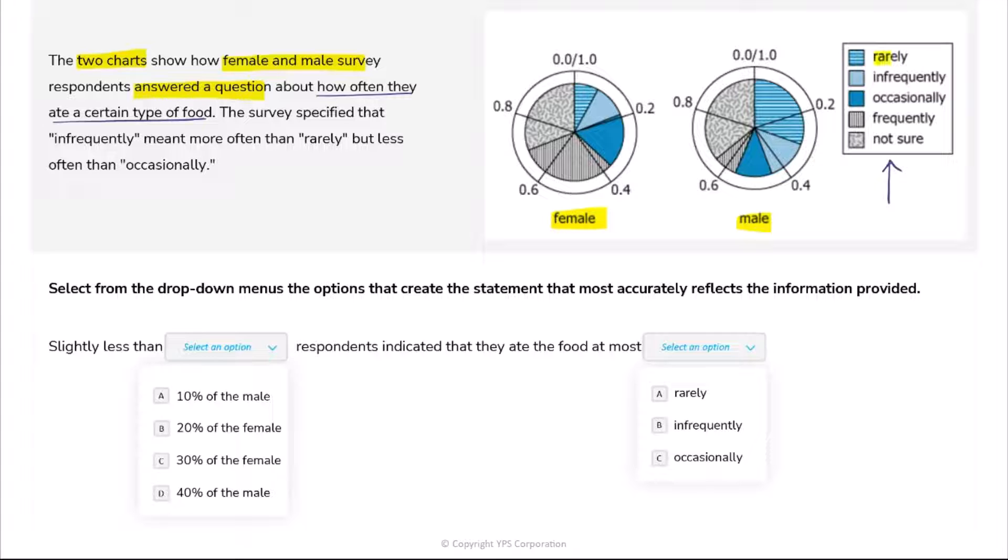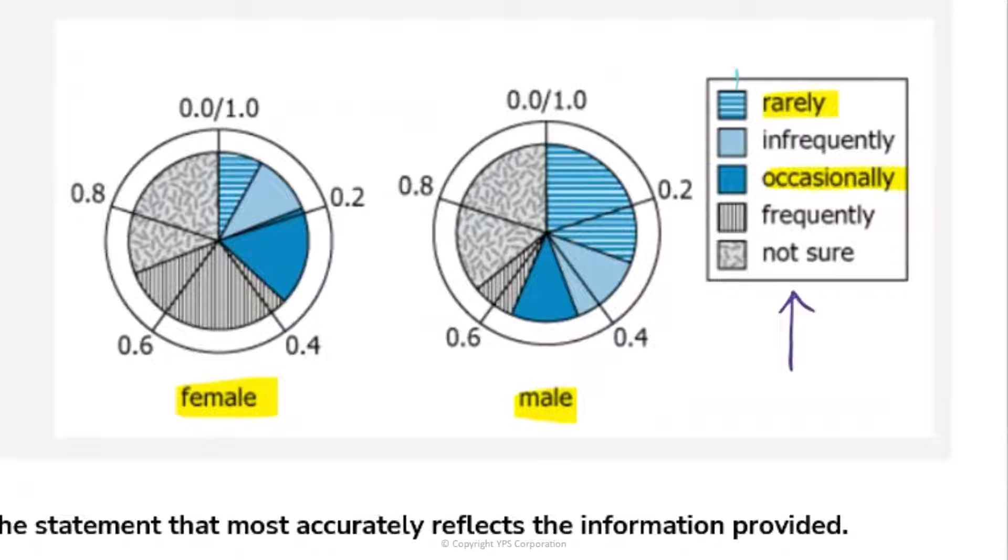For example, if we try to read the female chart, you'll see that this first part - the horizontal blue lines which represents rarely - is this much on the female chart. Now how do I really read this? What is the value? You see it starts from 0.0, and there's also a 1.0. I'll explain what that means.